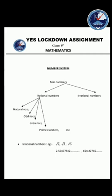Irrational numbers means which we cannot write in the form of P by Q. Only some category of numbers come as irrational. For example: root 2, root 3, root 5, root 7, etc. - meaning root of prime numbers. Root 4 is not irrational because root 4 equals 2, so it is not irrational. But root 2 is irrational. Root of 2, root of 3, root of 5 - these are all irrational. Another example is non-terminating, non-repeating decimals. These two are the irrational numbers.